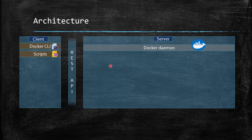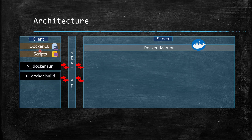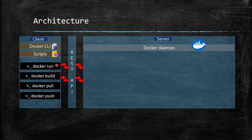In between the client and server there is a REST API layer — they communicate using this REST API. Whenever you run a command like 'docker run', 'docker build', 'docker pull', or 'docker push', it uses this REST API to communicate with the server, and the Docker daemon receives the request and takes action accordingly.